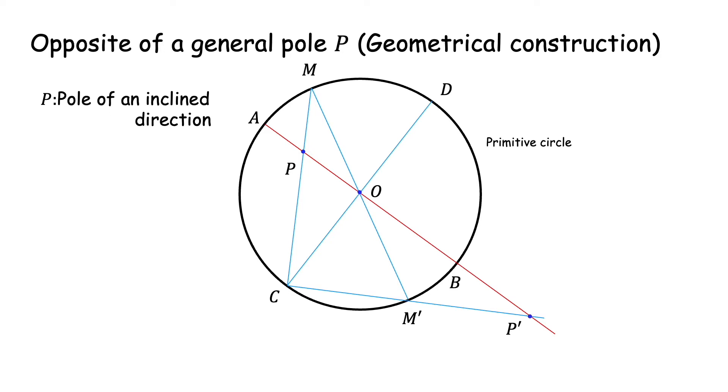The proof of this is in realization that if we rotate this primitive circle about the diameter AB by 90 degrees such that C coincides with the south pole, then P simply represents the stereographic projection of the direction OM' and P' represents the stereographic projection of 180 degree away direction OM'. Thus, P' is the opposite pole of P.